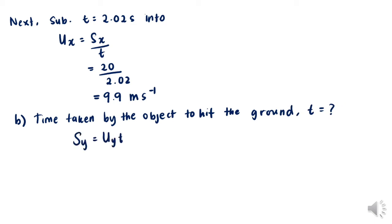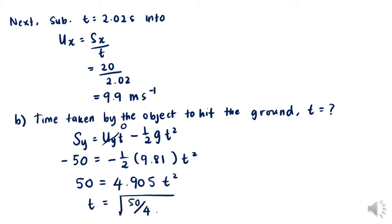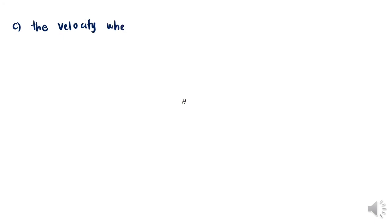For part b, we use sy equals uy·t minus half·g·t². Substituting sy equals negative 50 meters and uy equals zero, we solve for t: t equals the square root of 50 divided by 4.905, giving t equals 3.19 seconds.